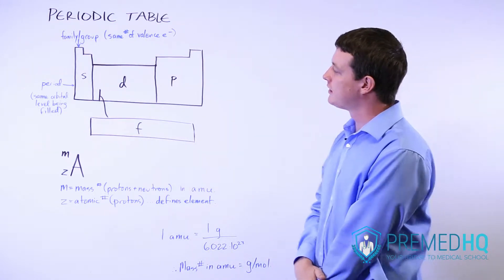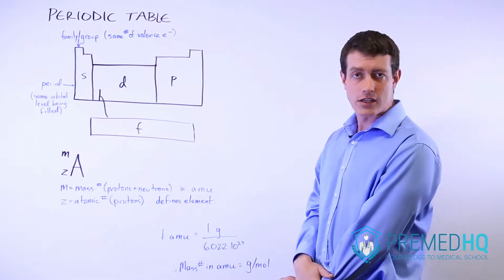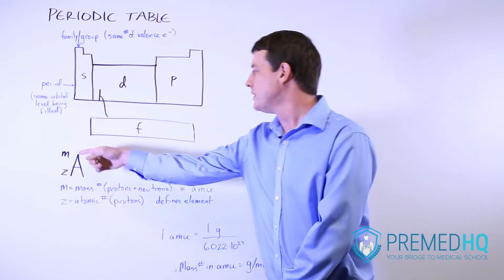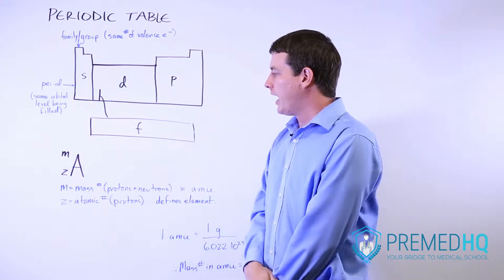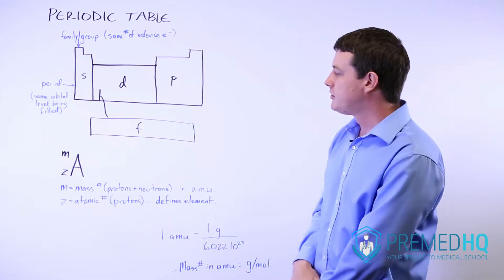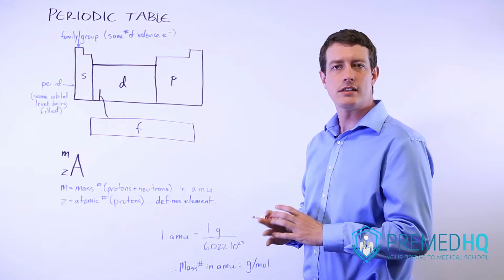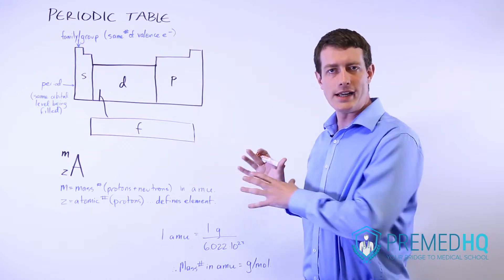So the first thing you'll notice is that a lot of times when you see atoms listed they will have two numbers attached to them. The top one will be m, the mass number, and the bottom one will be z, the atomic number. The mass number is equal to the number of protons plus the number of neutrons and it will be listed in atomic mass units or amu.